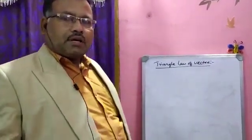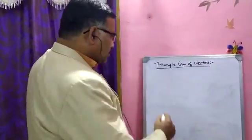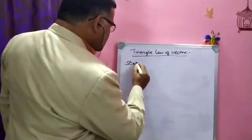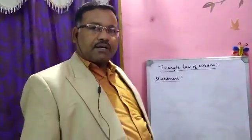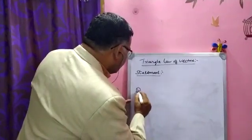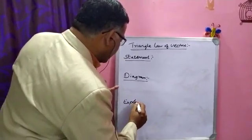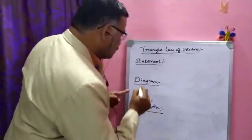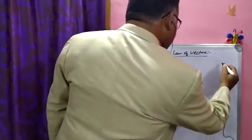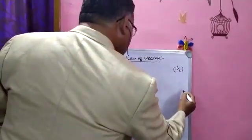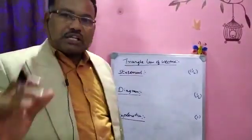Triangle of Vectors. This topic contains three subdivisions: statement, diagram, and explanation. For the statement they will give one and a half marks, diagram half a mark, and explanation one mark — totally three marks.